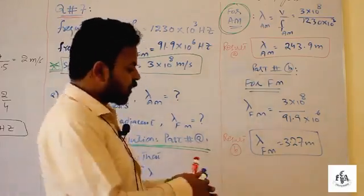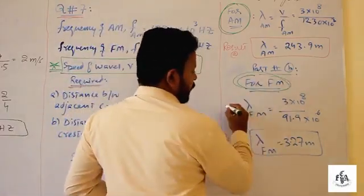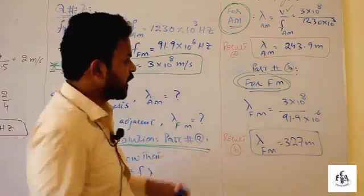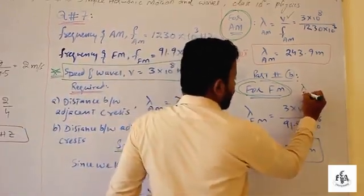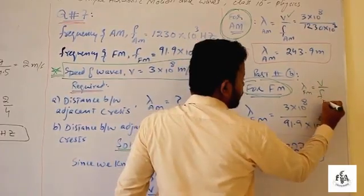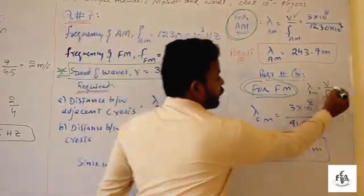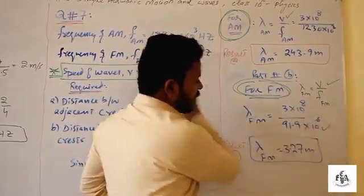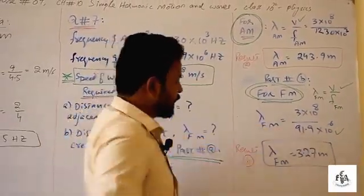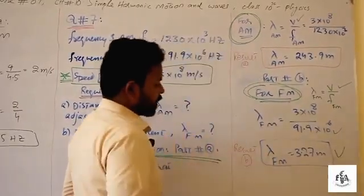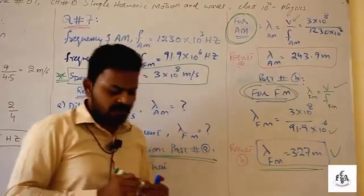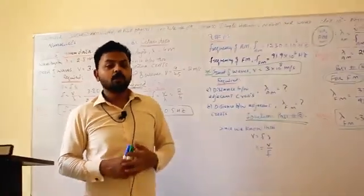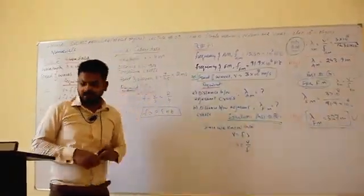For part (b), FM waves: v = 3 × 10⁸ m/s. We write λ_FM = v / f_FM. Putting in the FM frequency of 91.9 × 10⁶ Hz, we get λ_FM = 3.27 meters, which is the required wavelength for FM waves. This concludes the numericals of chapter one. Hope you enjoyed it — thank you for watching, Jazakallah.